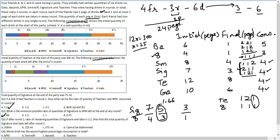If after round 2 the ratio of remaining quantities of Signature and Gate2 is 1 to 2, find the total quantity left after round 2. Signature and Gate2 left after round 3 is also in the ratio 1 to 2. Since both ratios are 1:2 after round 2 and after round 3, they were also consumed in the ratio 1:2 in the third round. After the third round there are 3 and 6 pegs left respectively, so before round 3 there were 4 pegs of Signature and 8 pegs of Gate2 — 12 units total after round 2.